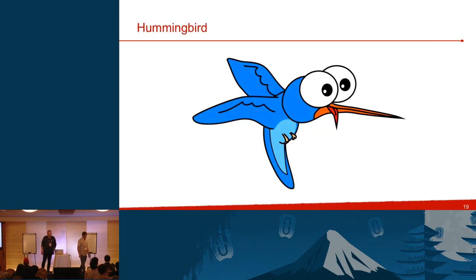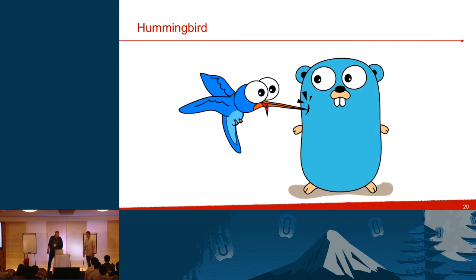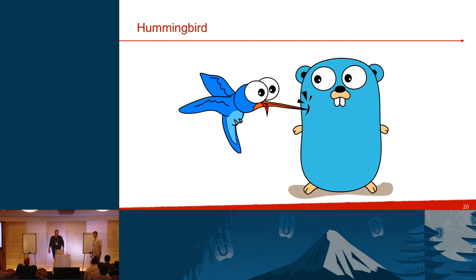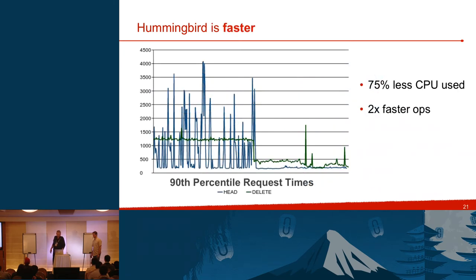A couple of years ago, my friend Florian asked me to go to GopherCon. I decided I should write something in Go, so I re-implemented the Swift object server. By the time I got to GopherCon, it was really benchmarkable and I was impressed with the performance. I spent the next year getting it to where it could be dropped in for the Swift object server. What we found: it's two times as fast for most operations and uses about 75% less CPU.